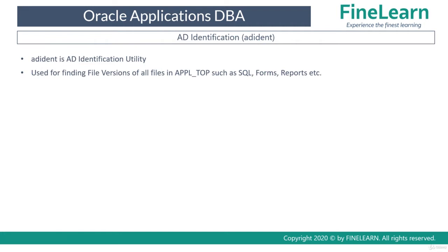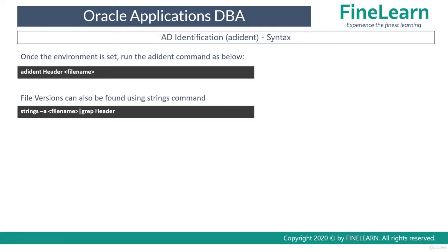Adident stands for AD Identification, and the main use of the adident utility is to find the versions of the files in the application tier. The syntax is very simple — you just need to run adident, space, header, followed by the name of the file for which you want to find the version.